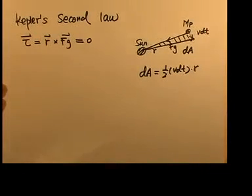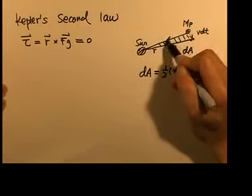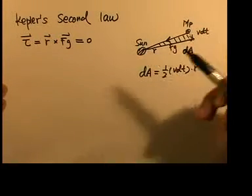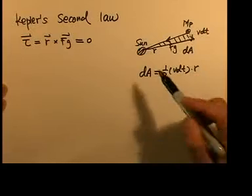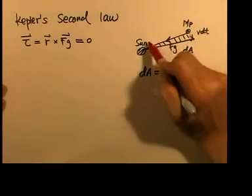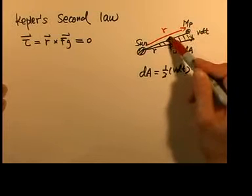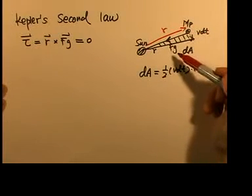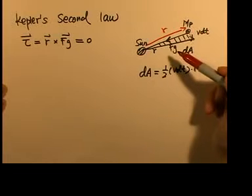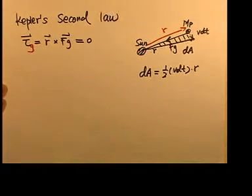The force between the sun and the planet is gravitational force fg — a gravitational attraction force. According to the definition of torque, torque equals force cross lever arm. In this case, the lever arm is vector r, which has a 180-degree angle with respect to the attractive force fg. So r cross f equals rf sin(180°) = 0. Therefore, the torque caused by the gravitational force equals zero.